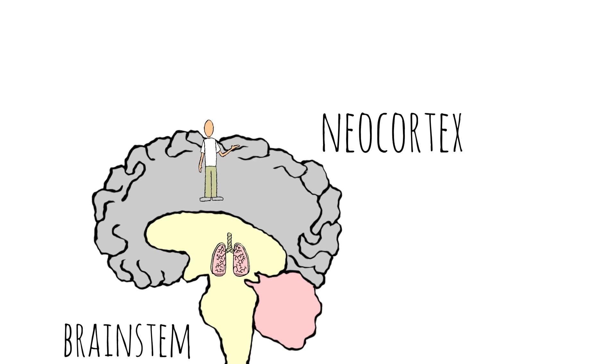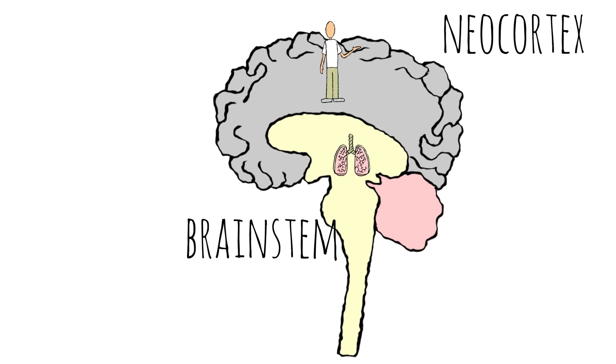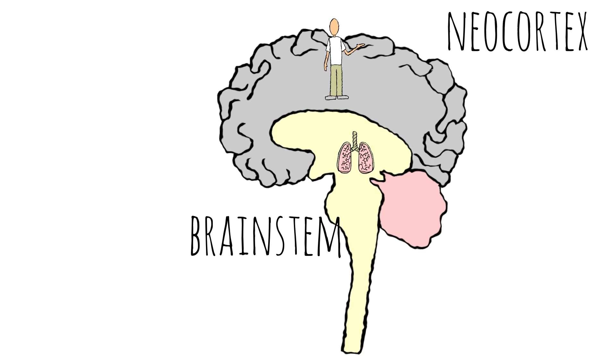The neocortex is the part that has thoughts and feelings, the part that makes you, you. And it can live on after the brain stem, the part that controls minor things like breathing, dies.